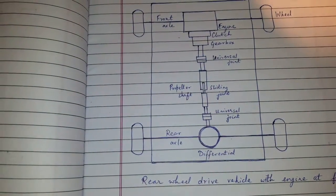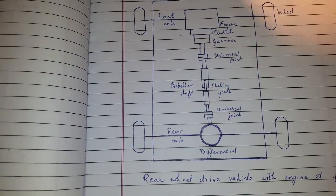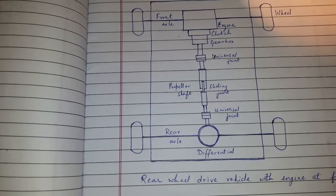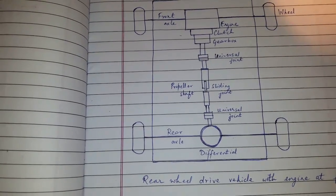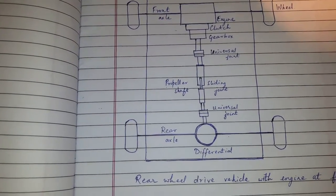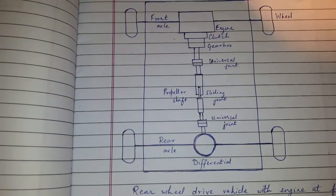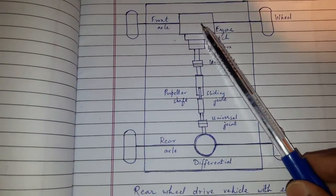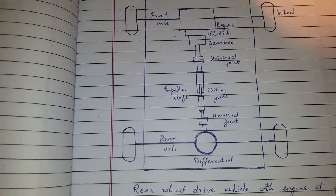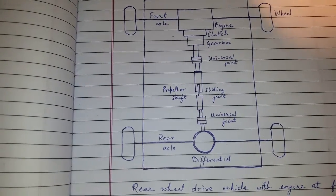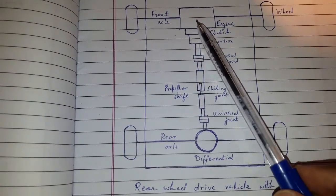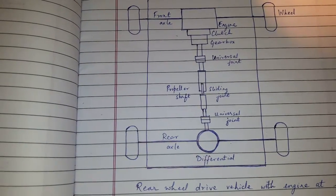Hi friends, today's topic of discussion is types of vehicle layout based on vehicle drive. So this is rear wheel drive with engine at front. In this arrangement, the engine is fitted in the front of the vehicle. The drive is given to the rear wheel.